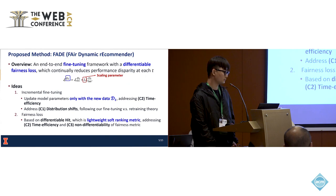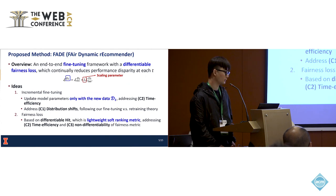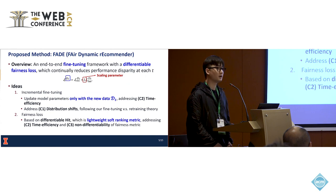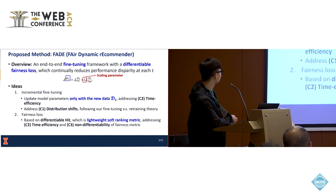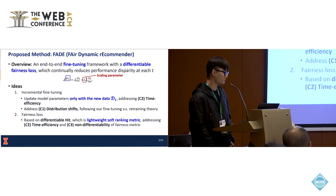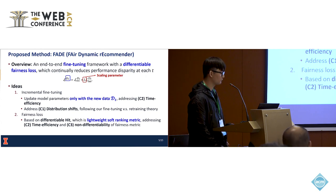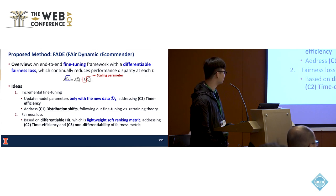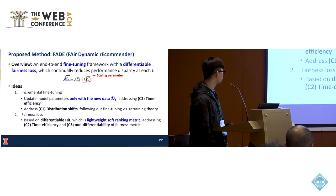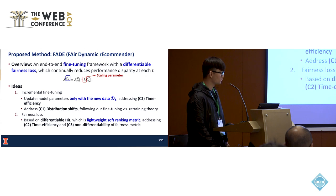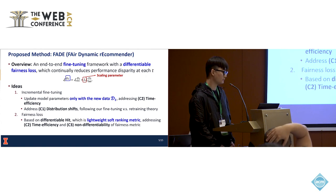In this paper, we propose the method named FAITH, an end-to-end fine-tuning framework with a differentiable fairness loss that continually reduces performance disparity at each time period. The loss function consists of the standard recommendation loss and the fairness loss with a scaling parameter. Our method uses an incremental fine-tuning strategy to update model parameters only with new data, naturally addressing time efficiency. This design choice is based on our fine-tuning versus retraining theory. We also propose a fairness loss based on differentiable hit, a lightweight soft-ranking metric addressing time efficiency and non-differentiability.